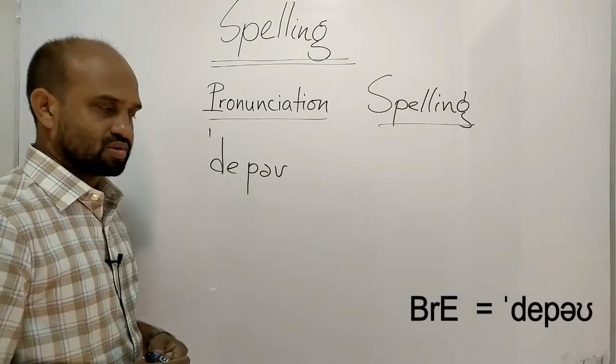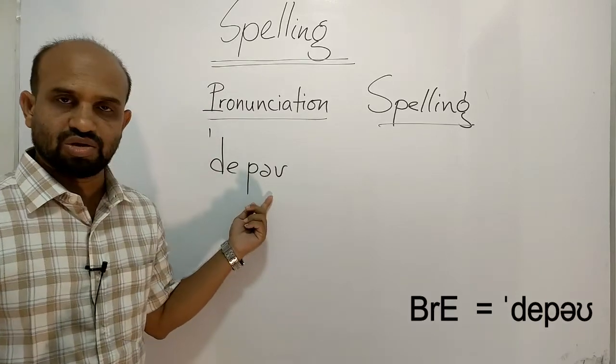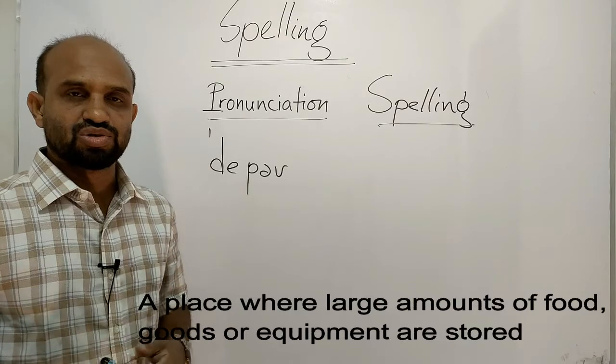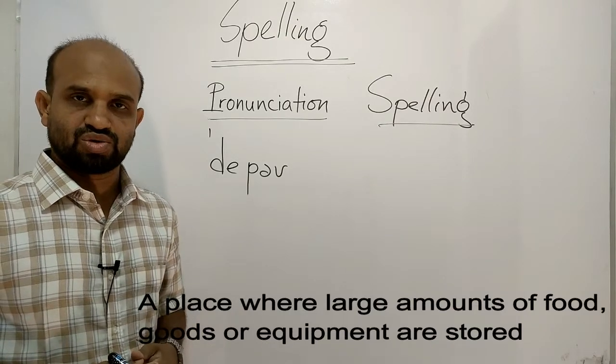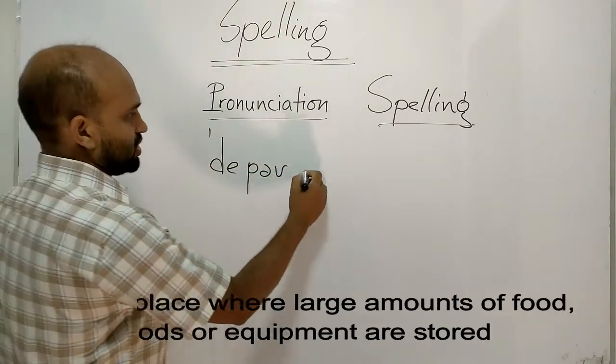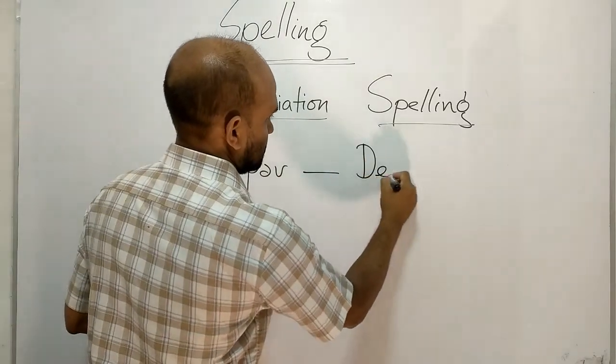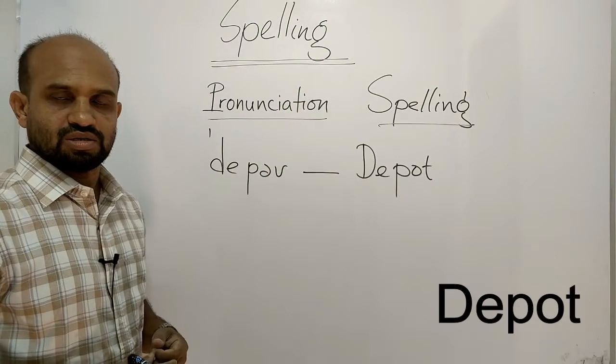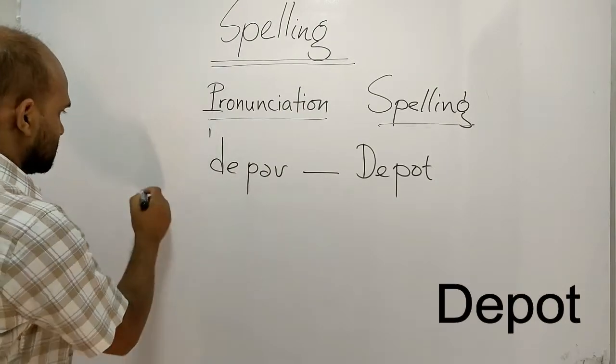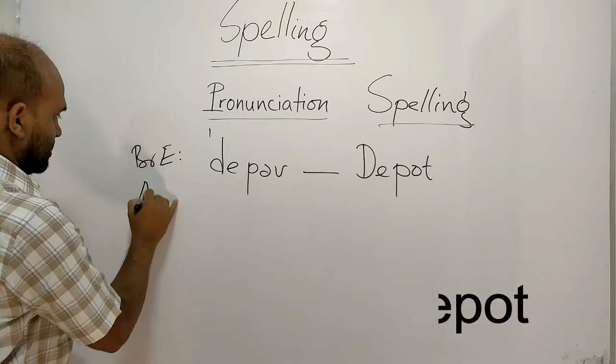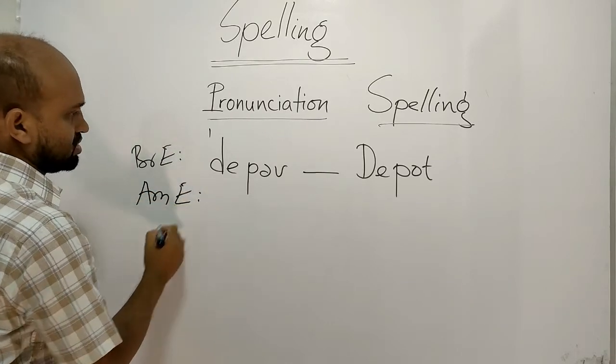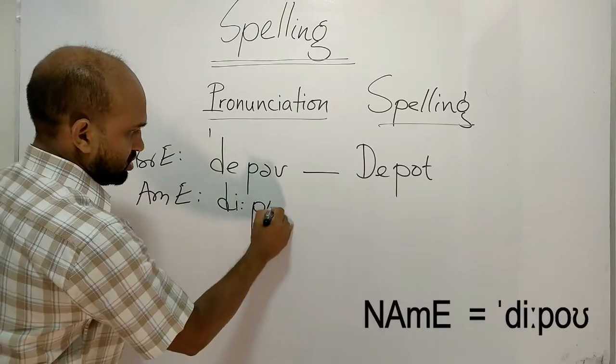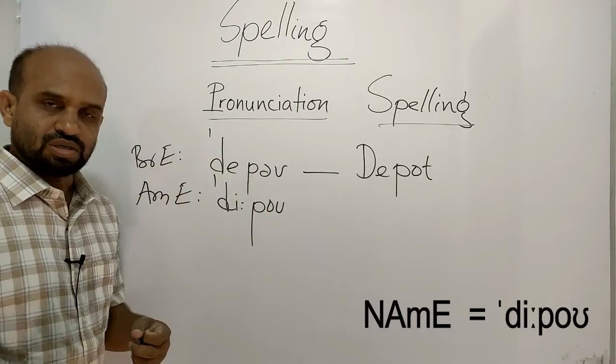Pronunciation is depot. The meaning is a place where large amounts of food, goods, or equipment are stored. Spelling is D-E-P-O-T, depot. This is in British English. And in American English, the sound is depot.